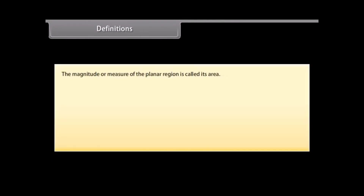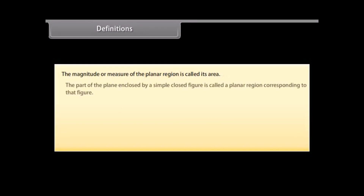Definitions: The magnitude or measure of the planar region is called its area. A planar region is the part of the plane enclosed by a simple closed figure, called a planar region corresponding to that figure.